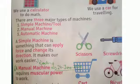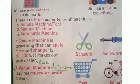A simple machine is something that can apply force and change its direction. It makes our work easier. Examples include scissors and a screwdriver.